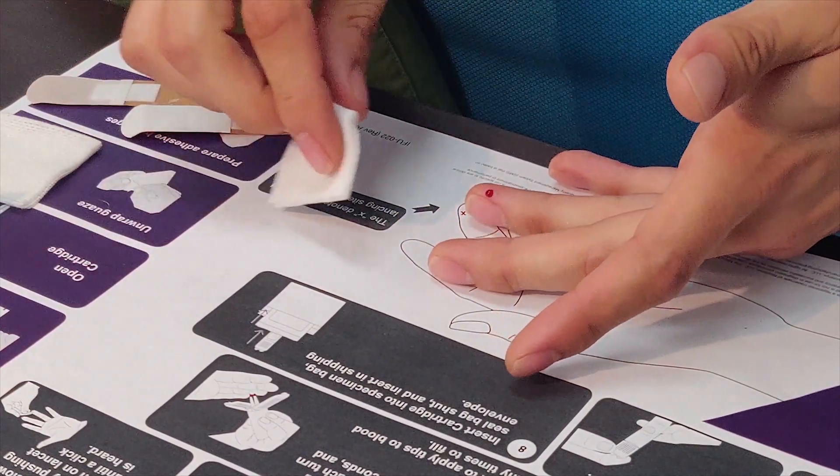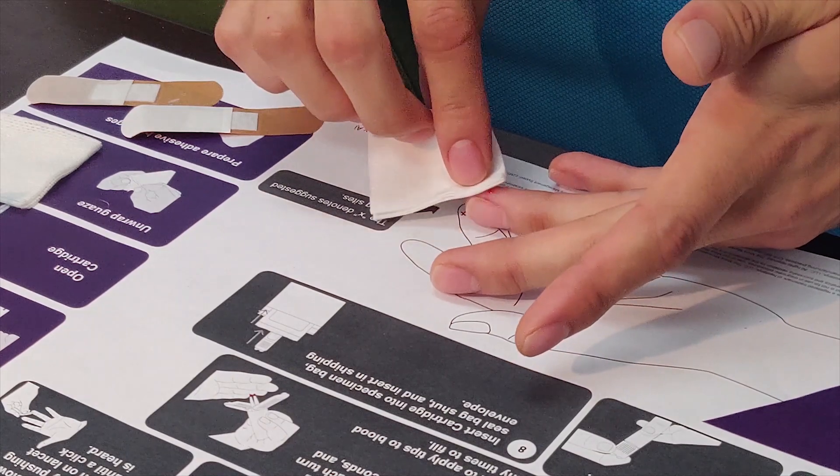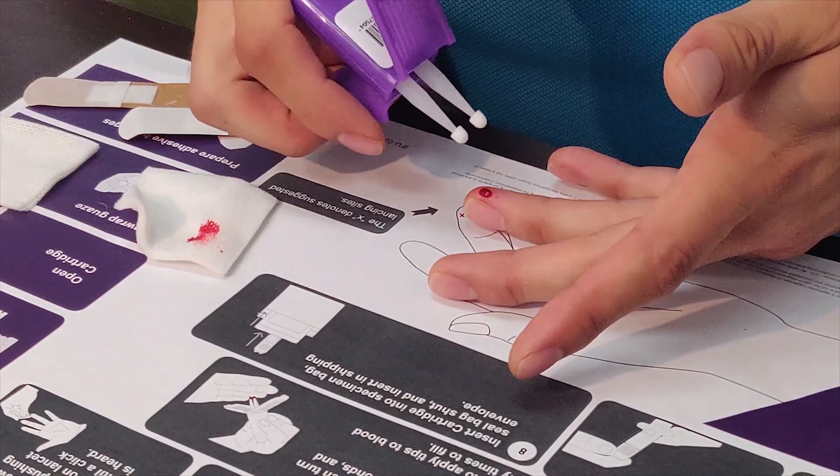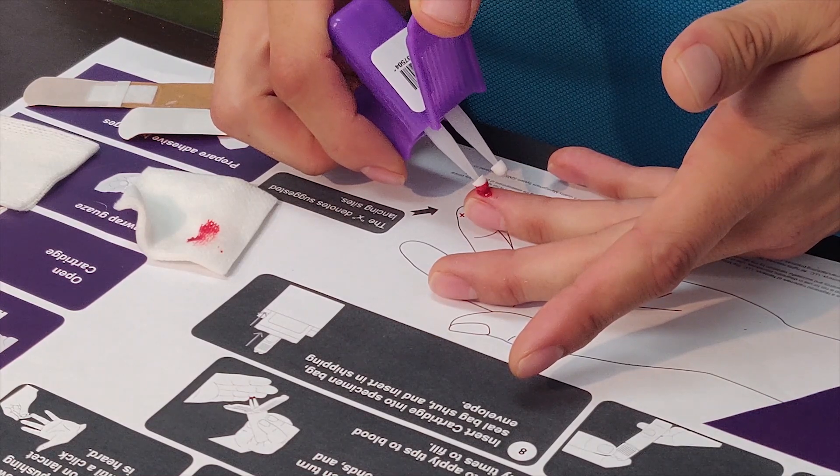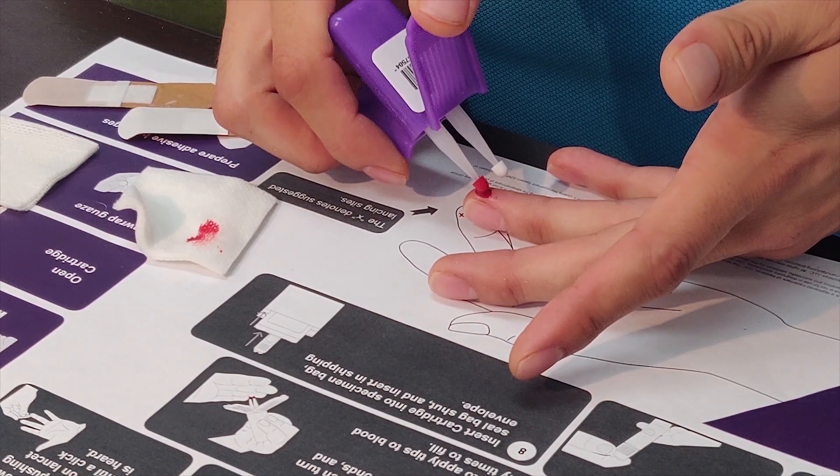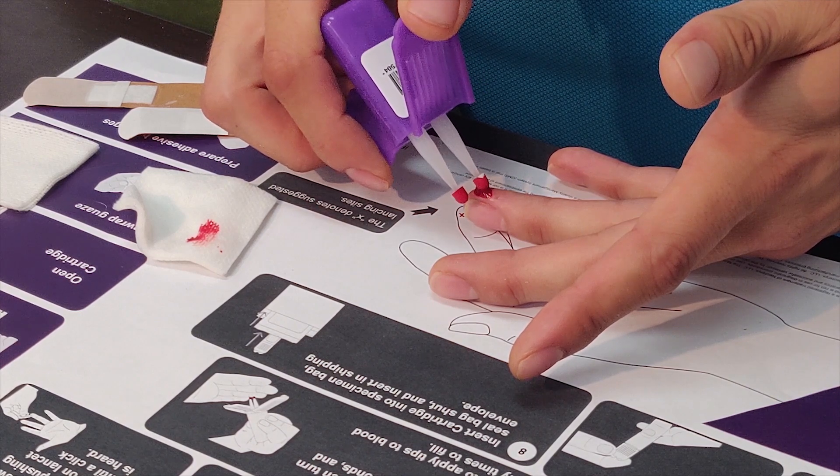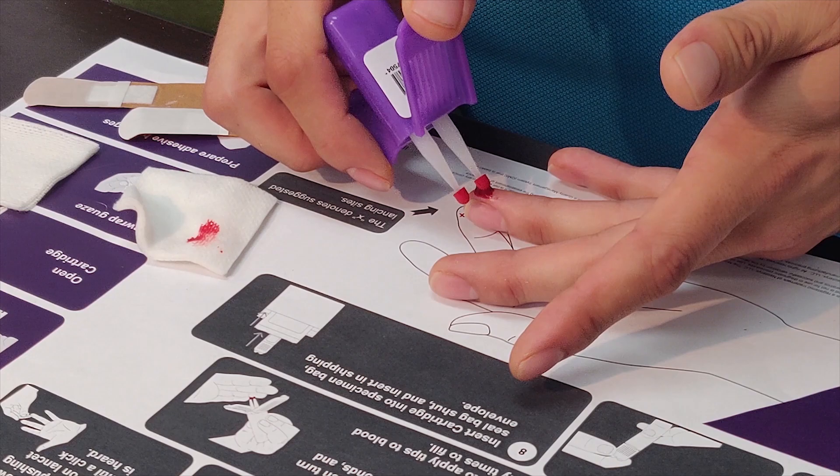Wipe away the first drop of blood with the gauze. Allow a second drop of blood to form. Apply the first sampling tip to the blood drop. Watch the sampling tip turn completely red and then count two seconds. Gently remove the sampler and apply the second sampler tip until it's fully red also.